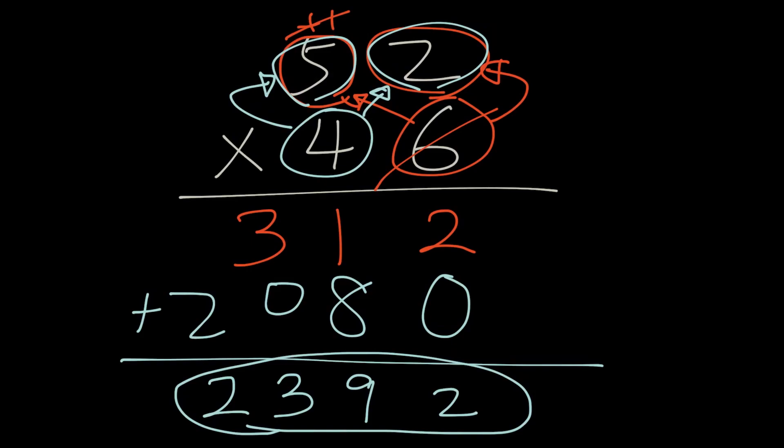So, these three examples are how you will multiply two-digit numbers by two-digit numbers. Thank you for watching.